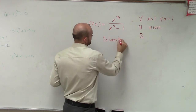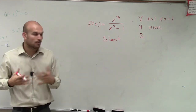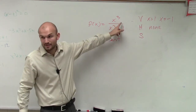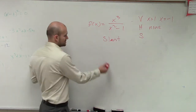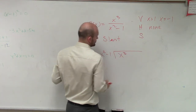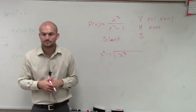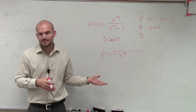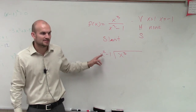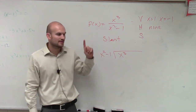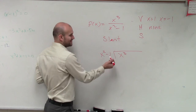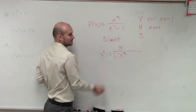For the slant asymptote, make sure you have this written down. We're going to use long division. Since the denominator has a smaller degree than the numerator, it can divide into it. So we write x squared minus 1 dividing into x cubed. We can't use synthetic division because this is a quadratic — degree 2. You can only use synthetic division with a linear factor. So we use long division: x squared goes into x cubed x times.